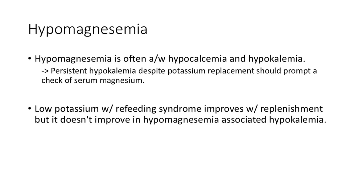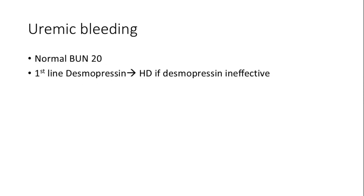Hypomagnesemia often accompanies hypocalcemia and hypokalemia. Persistent hypokalemia despite replacement should prompt a check of serum magnesium levels. Uremic bleeding can be managed with desmopressin, and if ineffective, hemodialysis may be required to control bleeding.